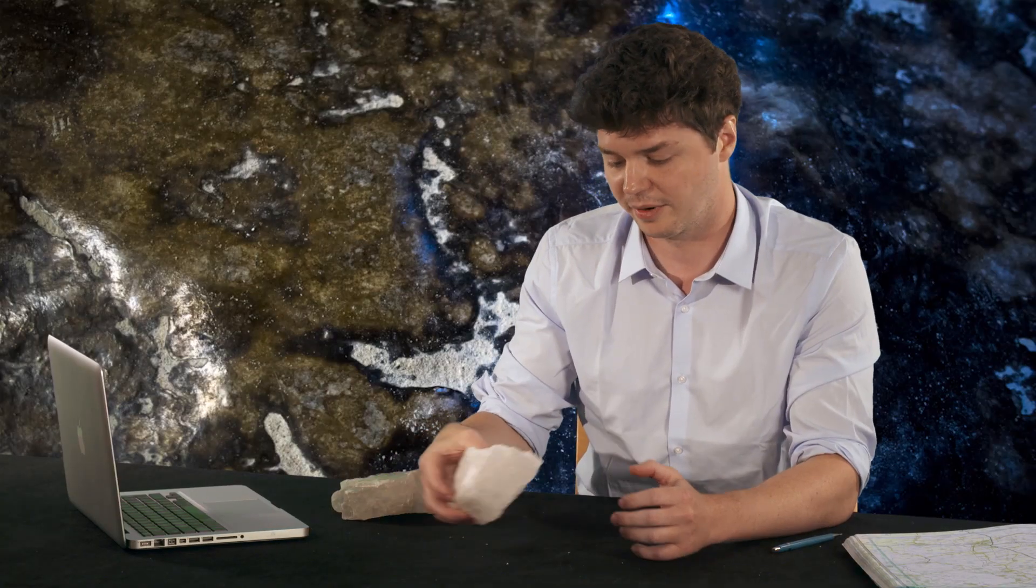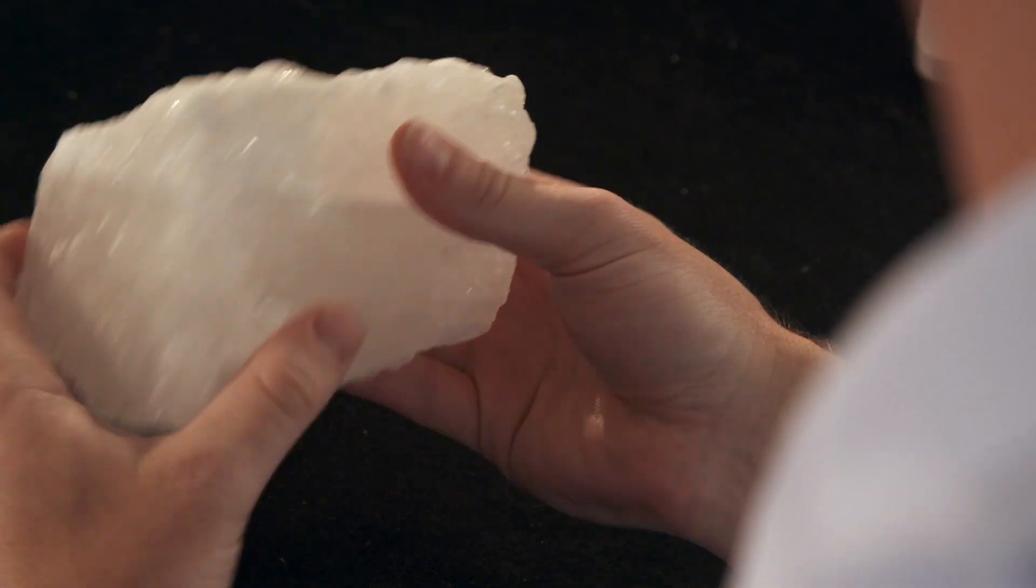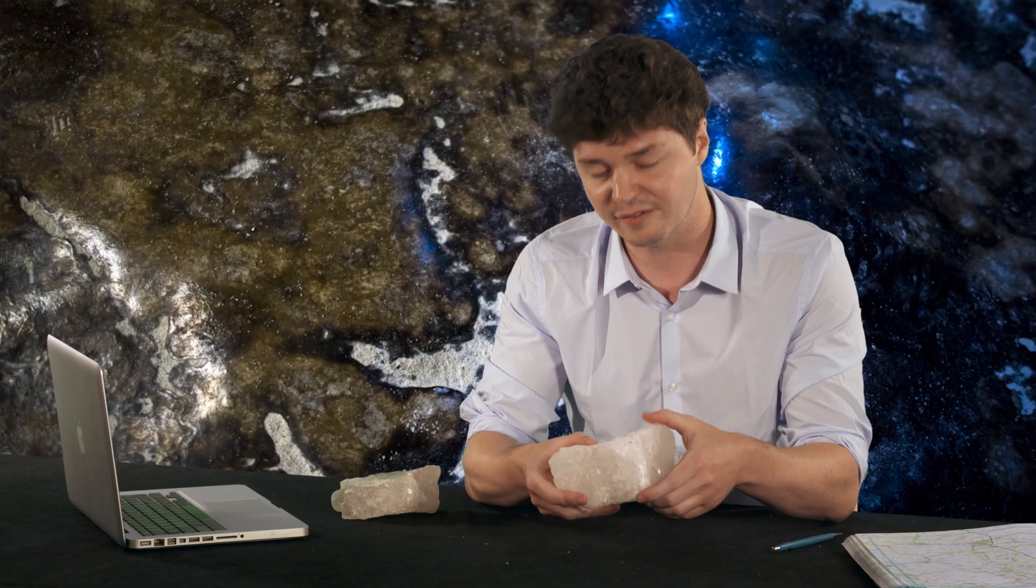A common type of evaporite is rock salt or halite, the kind of salt that's spread on roads during the winter. Rock salt has several properties that make it potentially well suited for hosting a geological disposal facility.